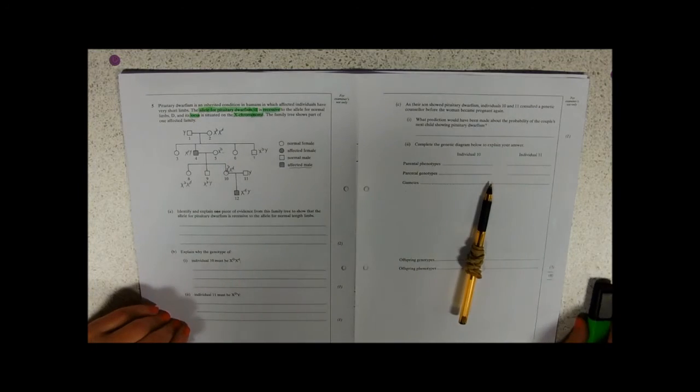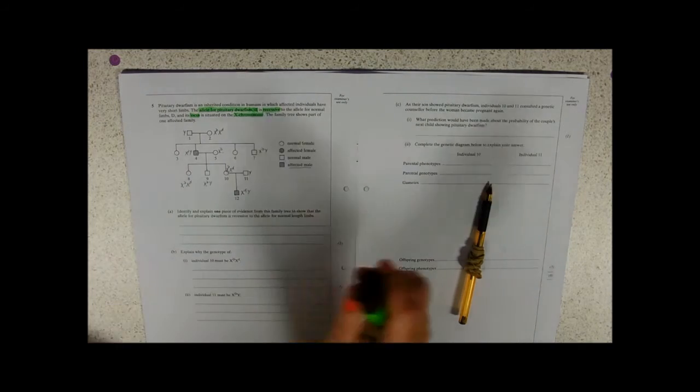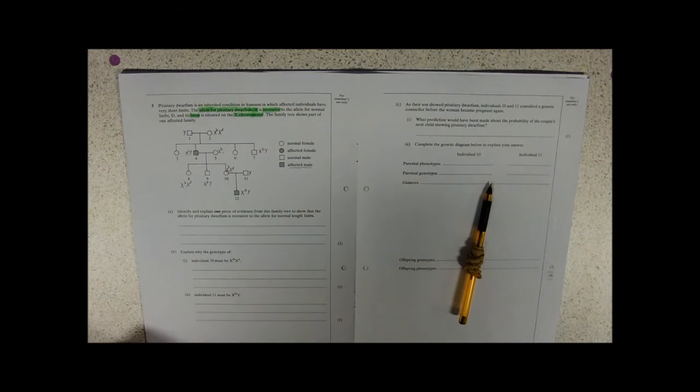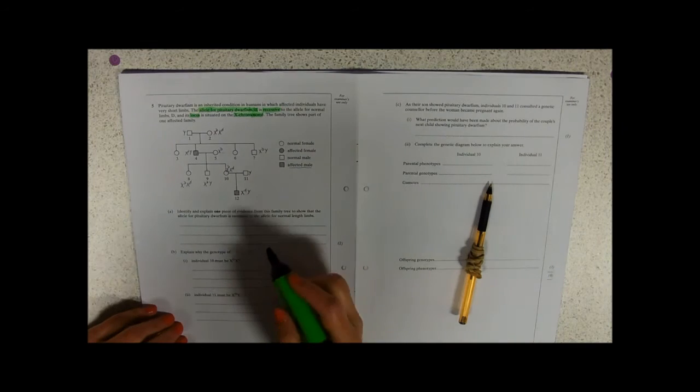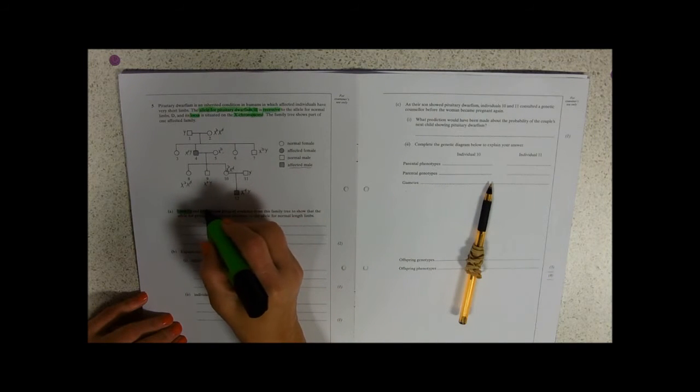Now get on to the questions. So it's always a really good idea to just have a little bit of an annotation of your family tree, work out what you actually do know, and what you don't know. Identify and explain. So we need to identify our evidence and explain it.